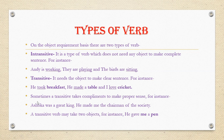A transitive verb needs an object to make a complete sentence. For example: 'He took breakfast,' 'He made a table,' and 'I love cricket' — here breakfast, table, and cricket are the objects. Sometimes a transitive verb also takes a complement, for example: 'Asoka was a great king' and 'He made me the chairman of the society.'